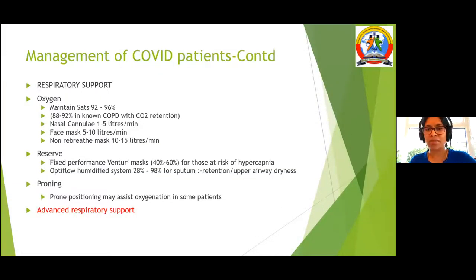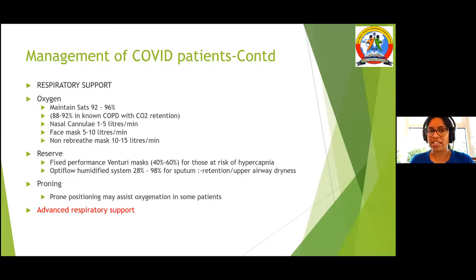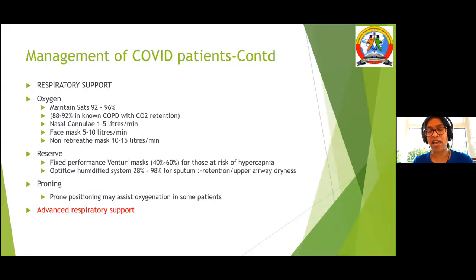Our main focus is on respiratory support. For COVID patients, we had specific target saturations. I know India is going through oxygen supply challenges right now — in the UK we went through that too, but we had a clear strategy. For patients with no history of COPD, we targeted 92 to 96% oxygen saturation or oxygen level on arterial blood gas.